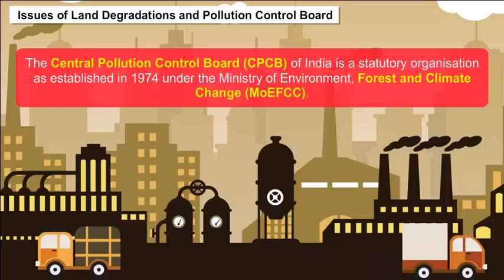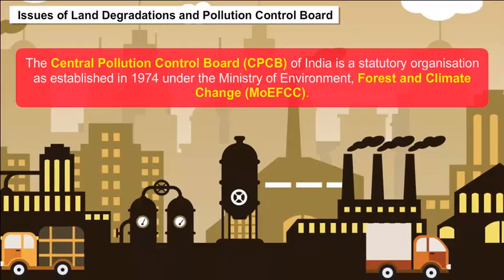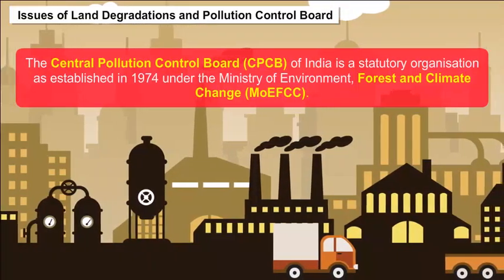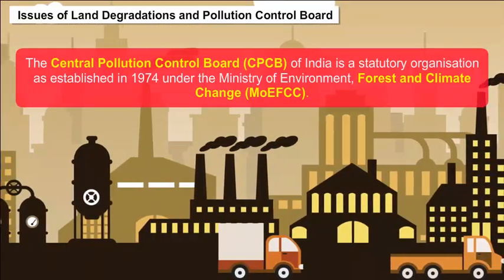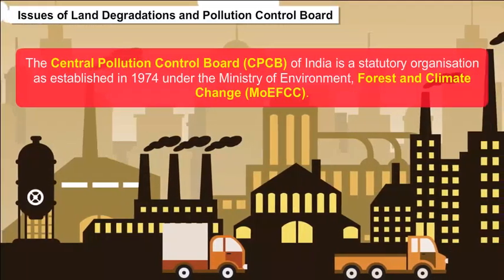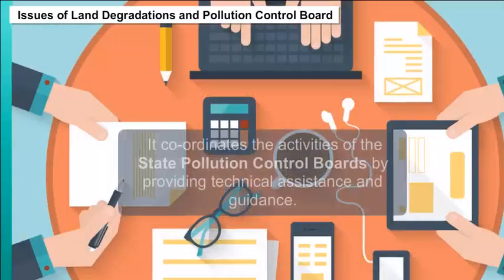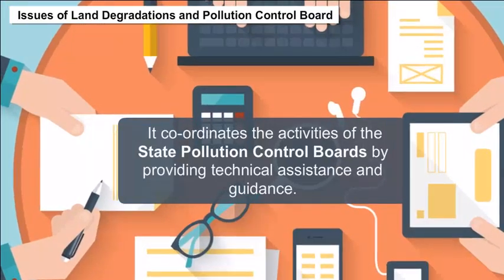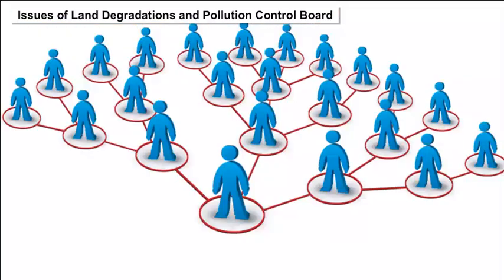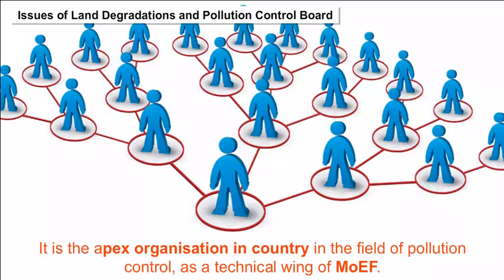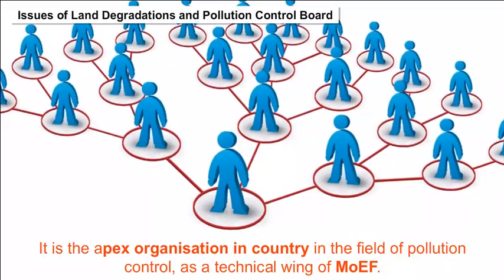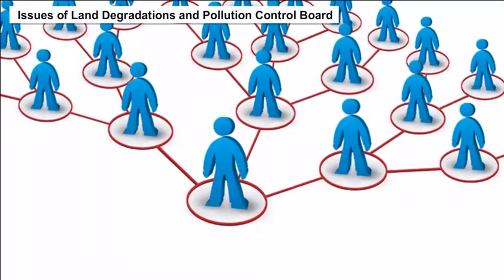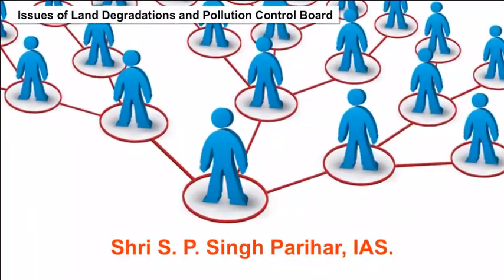The Central Pollution Control Board (CPCB) of India is a statutory organization established in 1974 under the Ministry of Environment, Forest, and Climate Change (MoEFCC). It coordinates the activities of State Pollution Control Boards by providing technical assistance and guidance. It is the apex organization in the country in the field of pollution control. As a technical wing of MoEF, the current acting chairman of the board is Sri S.P. Singh Parihar, IAS.